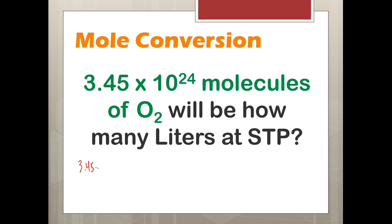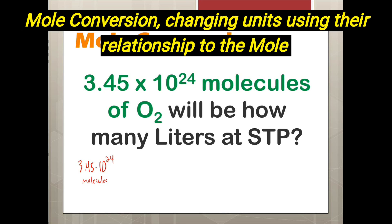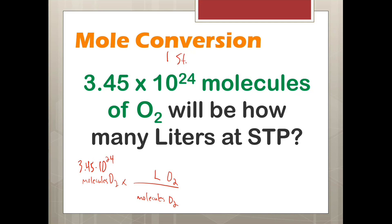You start with your known 3.1 times 10 to the 24 molecules of O2. All of this should be written. Times line. You bring down molecules of O2. Now, since we are not changing what it is, we still want this to be O2, and we want it to be liters at STP. We can do this in one step.